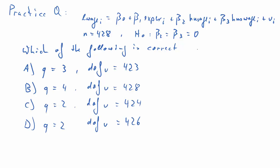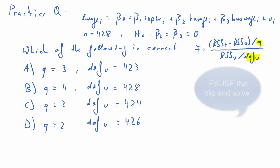And here are three other possible solutions. Recall that Q and DF_U are not only important for critical values, but also important in the calculation of the F statistic. So, pause the clip and try and solve it.